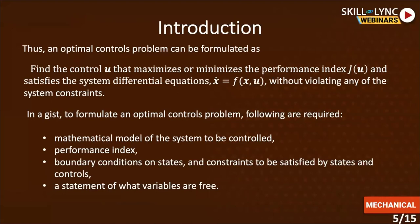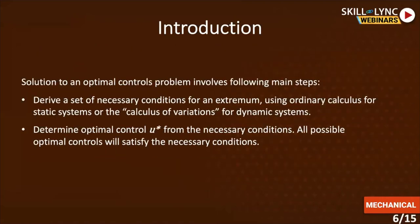We will be defining each element of the problem while identifying what kind of problems there are — different types of linear and non-linear problems based on the type of constraint. Once we have defined the problem variables, the solution becomes very easy. The solution to an optimal controls problem involves the following main steps: derive a set of necessary conditions for an extremum using ordinary calculus for static systems or the calculus of variations for dynamic systems, then determine the optimal control u-star from the necessary conditions. All possible optimal controls will satisfy the necessary conditions.